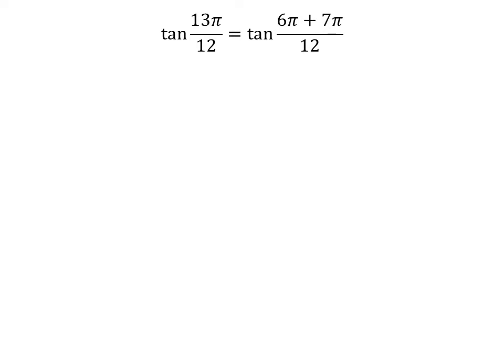13 times pi is equal to 6 times pi plus 7 times pi. So, tangent of 13 times pi upon 12 is equal to tangent of 6 times pi plus 7 times pi upon 12.